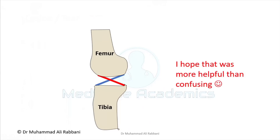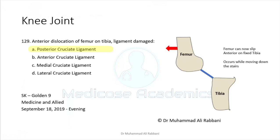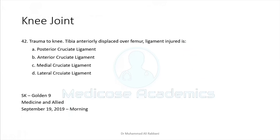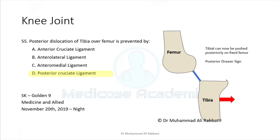Anterior dislocation of the femur on the tibia is possible when the posterior cruciate ligament is torn. Trauma to the knee with the tibia displaced anteriorly on the femur — the anterior drawer sign is positive, indicating ACL damage. Posterior dislocation of the tibia over the femur is prevented by the posterior cruciate ligament, giving a positive posterior drawer sign.